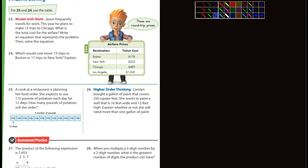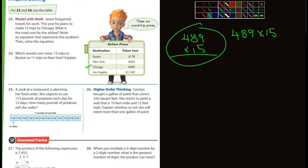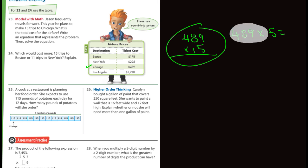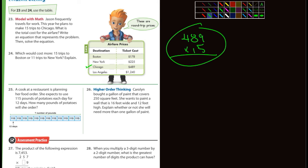Problem 23: Jason frequently travels for work. This year he plans to make 15 trips to Chicago. What is the total cost for the airfare? Here's Chicago, 15 trips, that's 489 dollars. 489 times 15. Write an equation that represents the problem: 489 × 15, that's an equation.